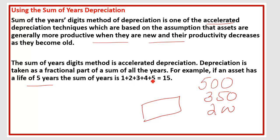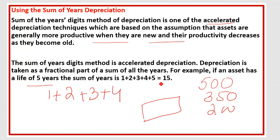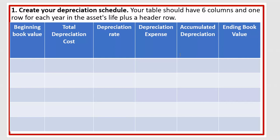These represent the first year, second year, third year, fourth year, and fifth year. If we have 4 years, you add 1 + 2 + 3 + 4. Here we are using 5 years, so we use 1 + 2 + 3 + 4 + 5, and the total is 15. I will show you where we use this 15.